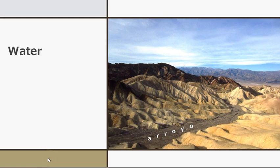Wind erosion is more important in deserts than in other biomes, because the lack of vegetation and moisture makes it easier for wind to pick up and remove sediment and soil. However, streams are still the most important sculptors of the landscapes in Earth's arid regions. These streams are typically ephemeral or intermittent, meaning they only contain water immediately after rain.